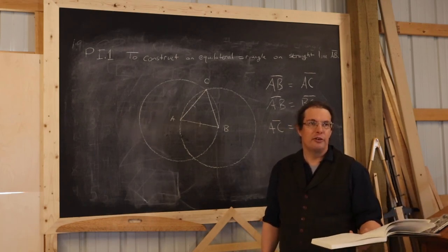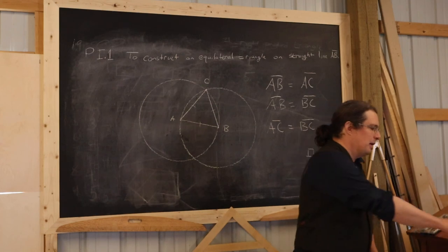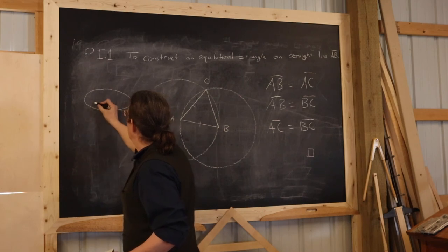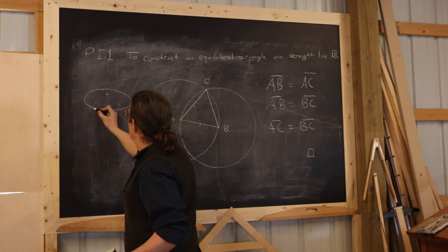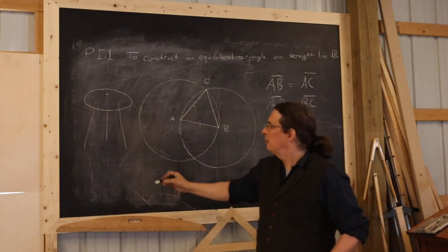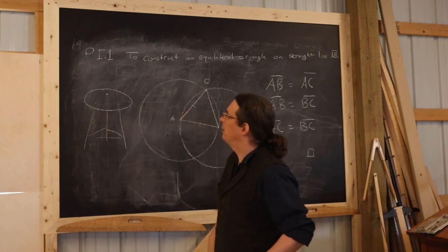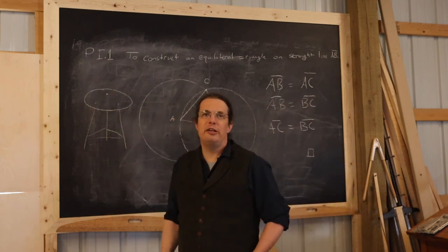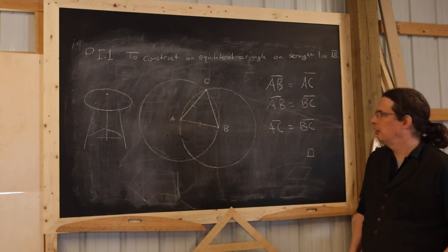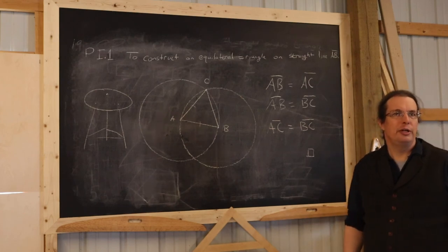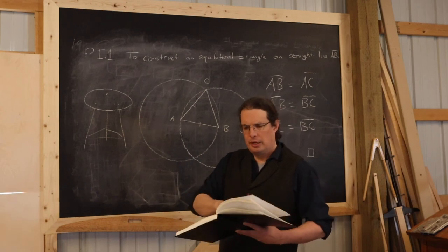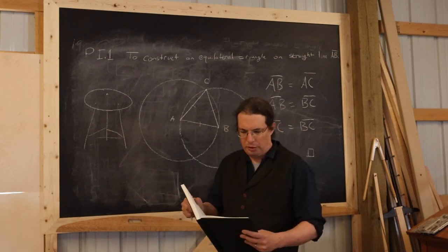There are direct applications of it in furniture design. A simple application might be that you are building a small three-legged stool. You've got to figure out where you're going to put the holes in the seat so that they're spaced evenly for the legs to go through. It could well be that you want those to go into an equilateral triangle pattern where the holes form the corners of the triangle. There are also some other more important, indirect applications as well.